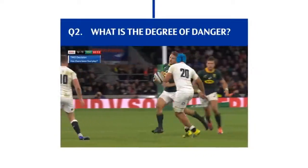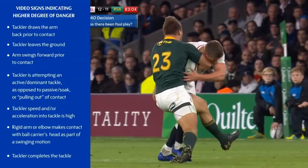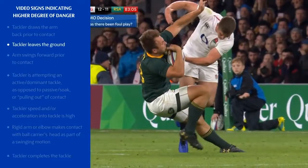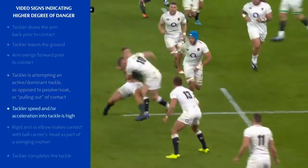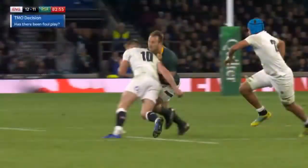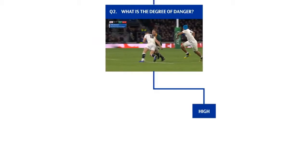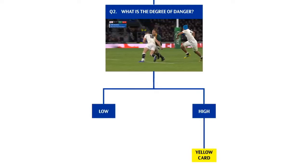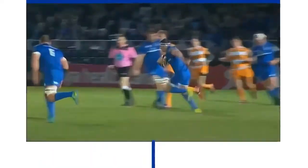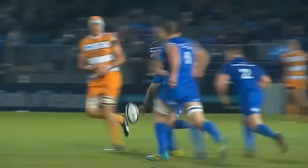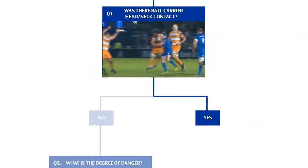Next, the officials must determine the degree of danger. In this example there is a high degree of danger, indicated by the tackler leaving the ground, a dominant tackle attempt, and both players at high speed. A high degree of danger without head or neck contact means the initial decision would be a yellow card. If the officials decide the degree of danger is low, the initial decision would be a penalty. In the other shoulder charge example, the degree of danger is automatically assumed to be high because contact is direct to the tackled player's head, so the initial decision would be a red card.